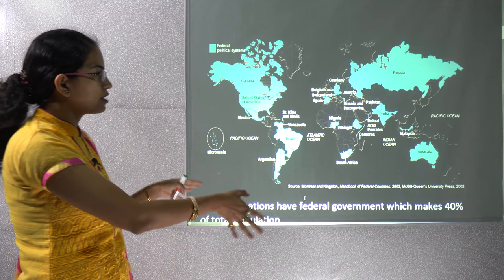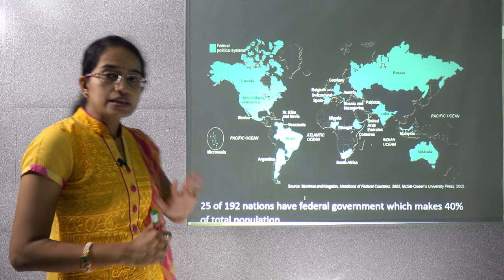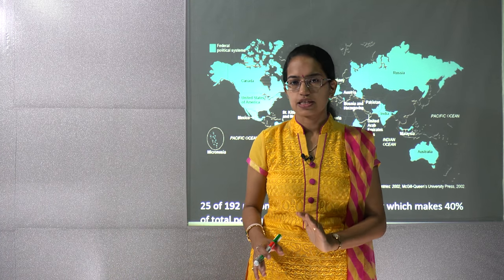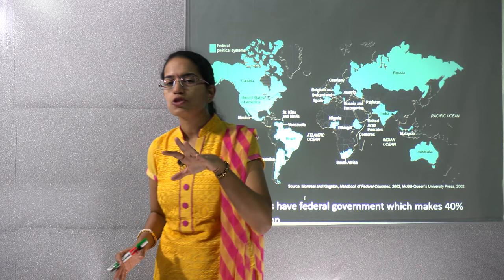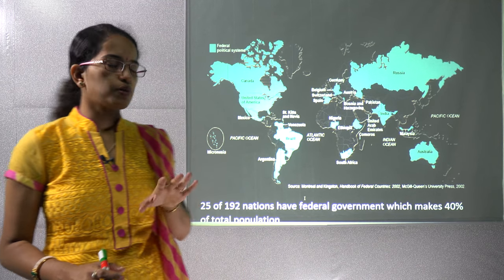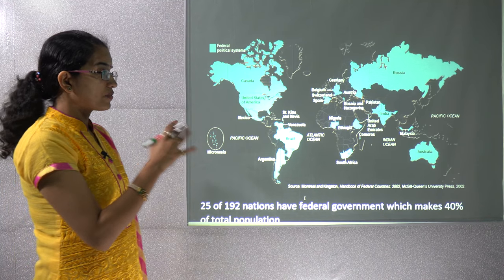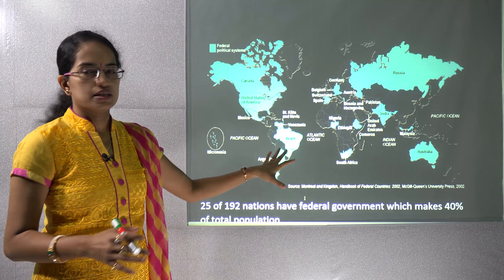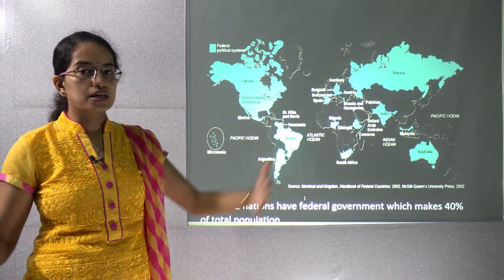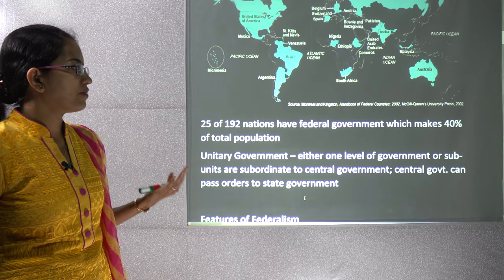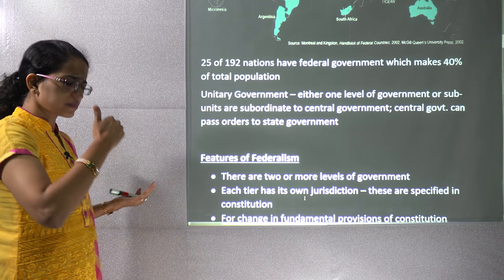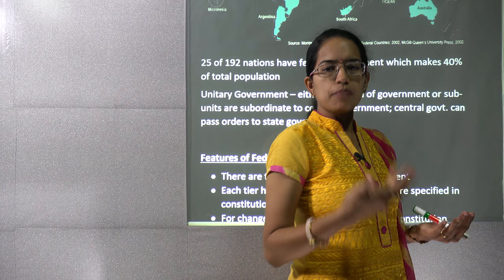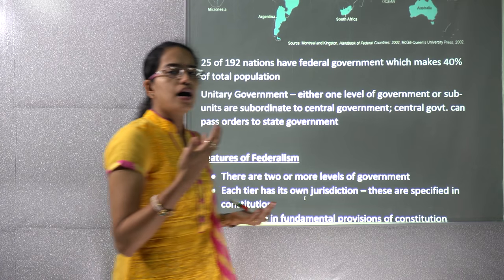If you look at the world map, out of 192 states, 25 nations have a federal structure of government, and these contribute to 40% of the population worldwide. Mostly, bigger nations that are larger in size and dimensions usually have a federal structure so that the execution of power becomes much more efficient.